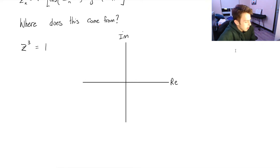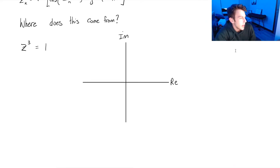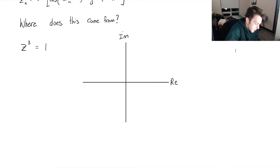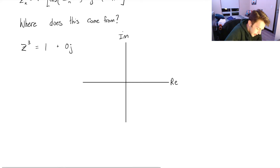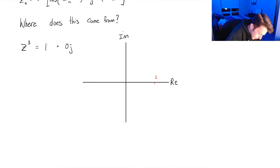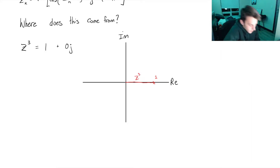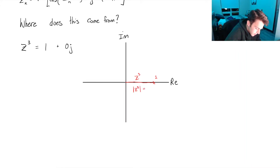So this z³ is what we're going to draw on the Argand plane. We know it's going to go 0 units in the imaginary axis and 1 unit in the real axis, because we can write 1 as 1 + 0j. So we start at the origin and represent z³ as a vector from the origin to 1. The length of this vector is the modulus of z³, which has a length of 1.